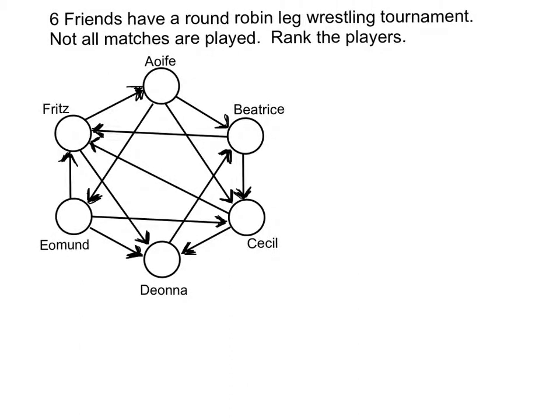And now, because this is the Matrix unit, I'm going to organize this into a winner's matrix. Six people is going to be a six by six.